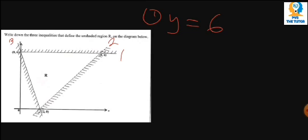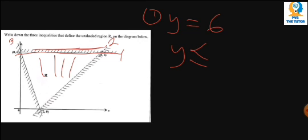Now, when you look at the part that is shaded, this side which is shaded is greater than 6. But the part which they want is this part which is unshaded. So we are going to say that that part is less than. Now, because this line is not dotted, it's a full line, we are going to say it's less than or equal to 6. That becomes our inequality number 1.